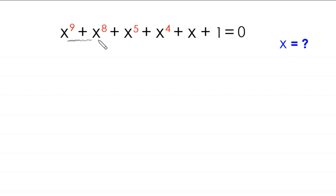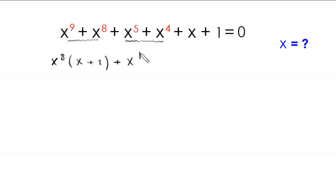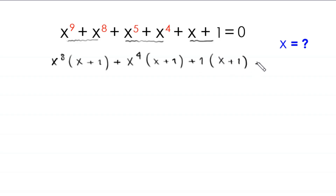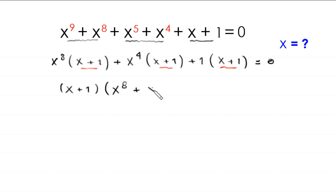Starting with the first two terms, x⁹ plus x⁸, we factor out x to the power 8, leaving x plus 1. From x⁵ plus x⁴, we factor out x to the power 4, leaving x plus 1. From the last two terms, we factor out 1, leaving x plus 1. Now x plus 1 is a common factor, so we factor it out, leaving x to the power 8 plus x to the power 4 plus 1, equal to 0.